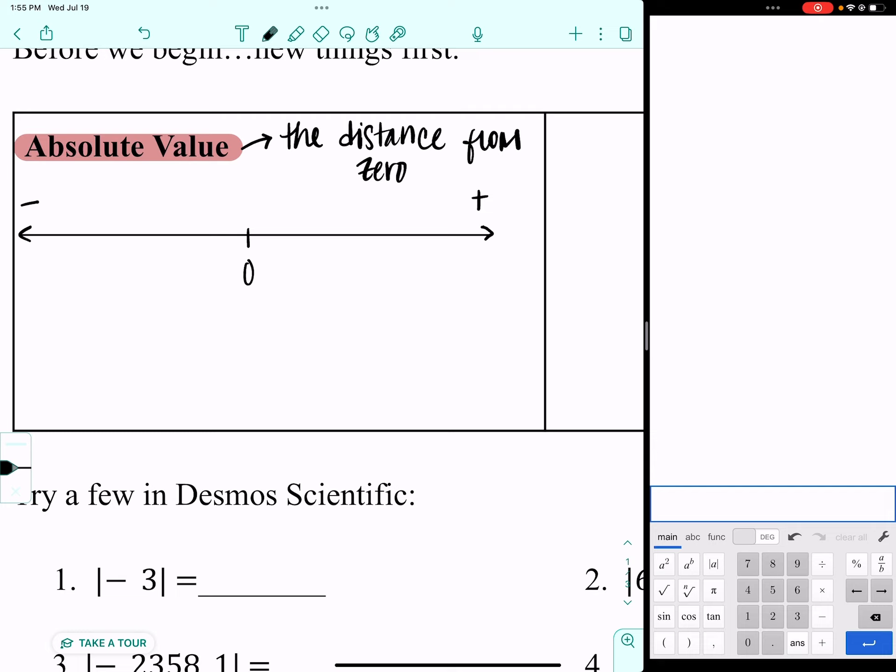Let's say I pick the number negative 4. If I want the absolute value of negative 4, it would look like two straight bars with a negative 4 in the middle. Think about them as parentheses that have been stretched out. What that means is I want to see how many jumps away from zero negative 4 is. So I would jump 1, 2, 3, 4 times.